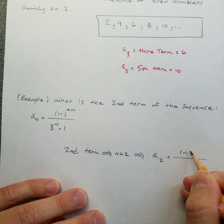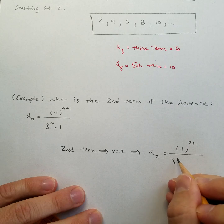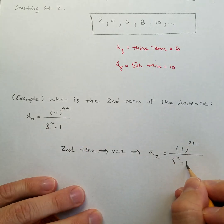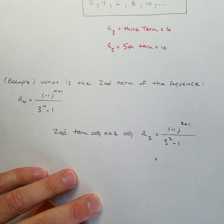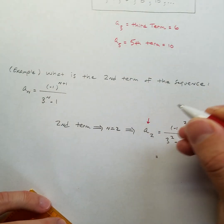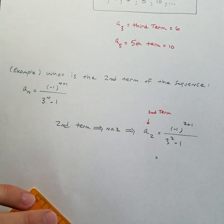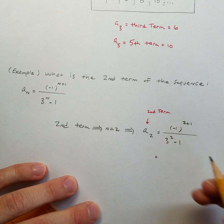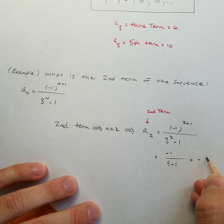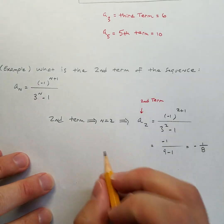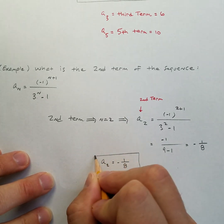So, to do the math, we get negative one to the power of two plus one, and then three to the power of two minus one. Whatever result we get is going to be the second term, because 'a subscript two' is asking us for the second term. This gives us negative one to the third power, which is negative one, and three squared is nine minus one — so we get negative one over eight. The second term of the sequence is negative one-eighth.